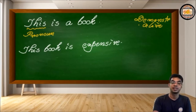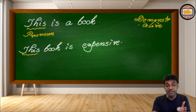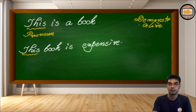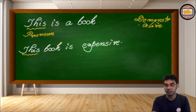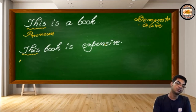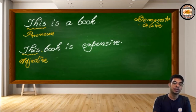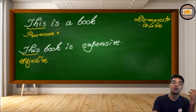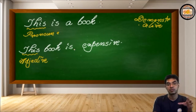Now, what about 'this' in the second sentence? If you look at it very keenly, you will find that 'this' is not a pronoun — rather, it is an adjective. And there you get confused: why do we consider it as a demonstrative adjective here and as a demonstrative pronoun in the first sentence?